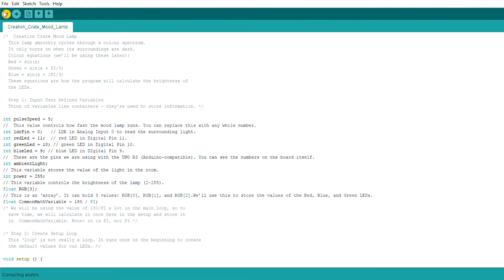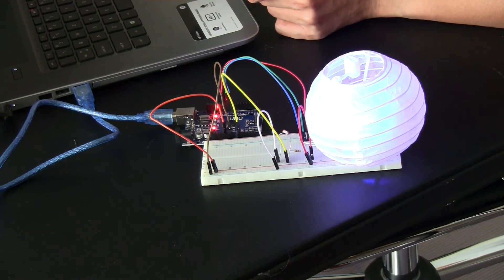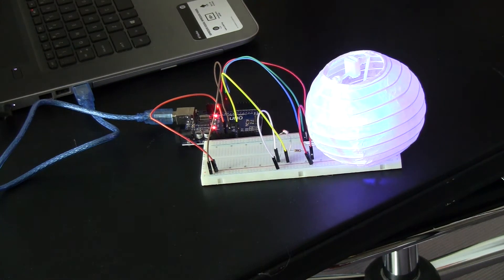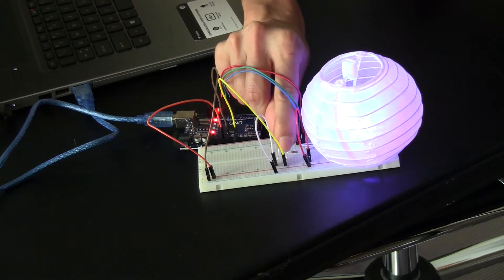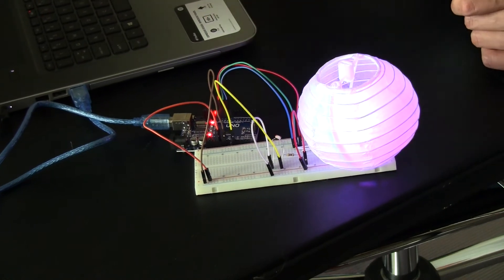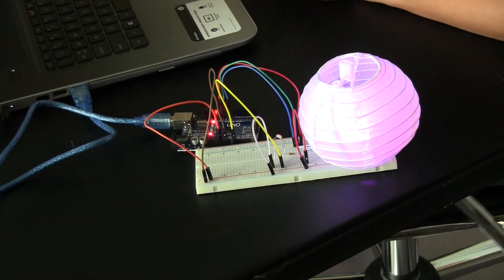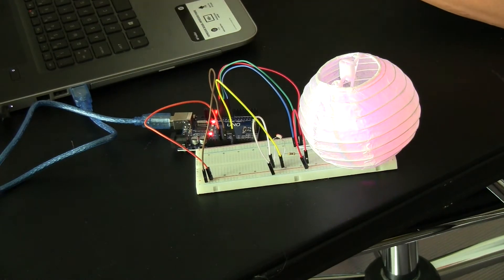So I'm going to do that right now. This variable controls the brightness of the lamp right here: power. So I believe this is it. I'm going to change this to 255 and I'm going to compile the sketch and I'm going to upload it. And there it goes.